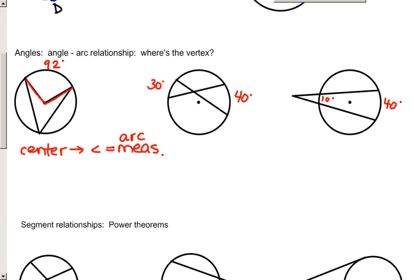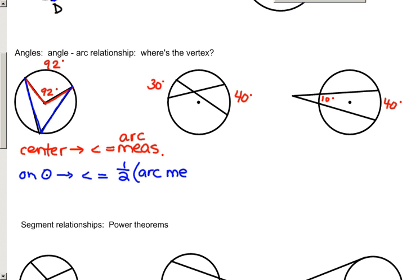The central angle in this diagram would be 92 degrees. When the vertex of the angle is located on the circle, the angle is exactly half of the intercepted arc measure. So in this diagram, if that intercepted arc is 92, then the angle measure would be 46.